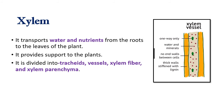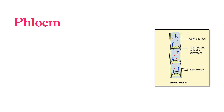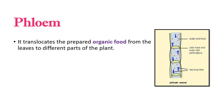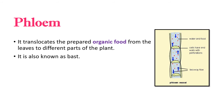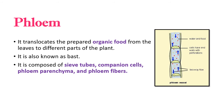The cell walls of xylem are thick and stiffened with lignin, and there are no end walls between cells. The second type of complex permanent tissue is phloem. Phloem translocates the prepared organic food from the leaves to different parts of the plant. Phloem is also known as bast. It is composed of sieve tubes, companion cells, phloem parenchyma, and phloem fibers. You can see the diagram of phloem in the given picture. Unlike xylem, there is two-way flow inside the phloem vessel, and cells have walls with perforations.